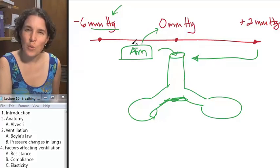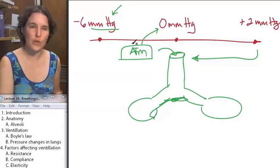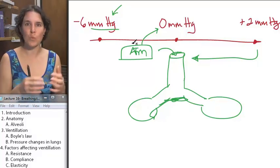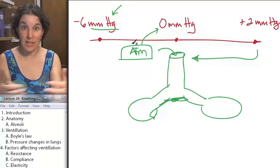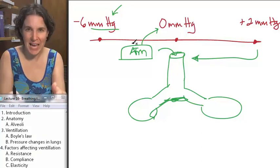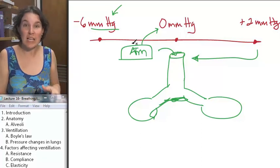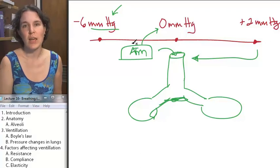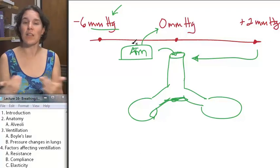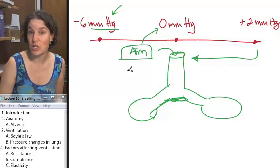Remember how we did that with action potentials? For determining the membrane potential, we set the external environment, the extracellular fluid at zero, and then we compared what was going on inside the cell. We're going to do the exact same thing here. We're going to set atmospheric pressure to zero.